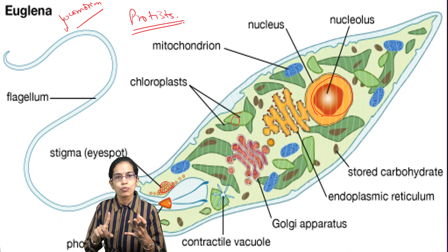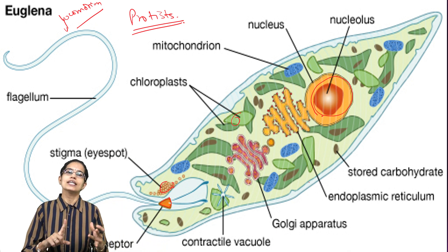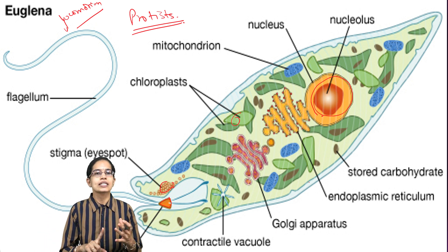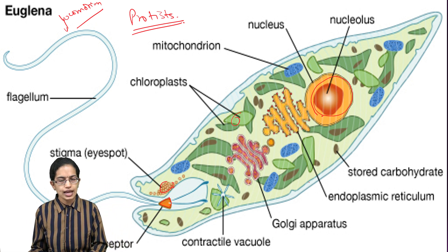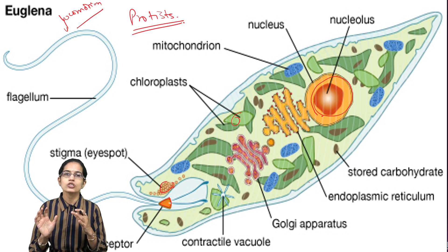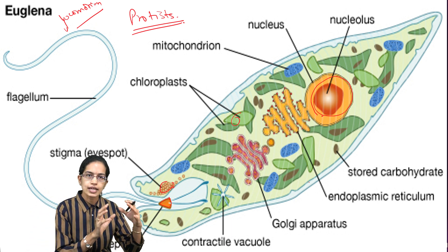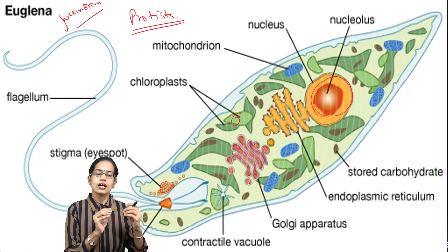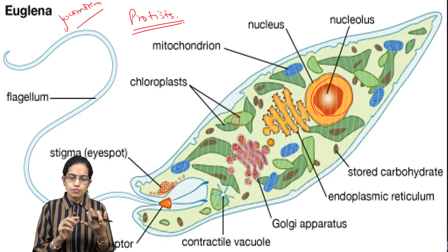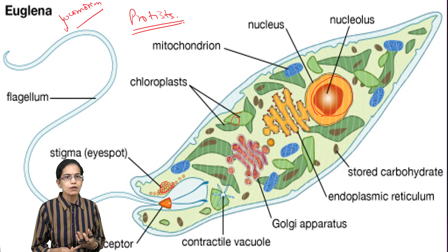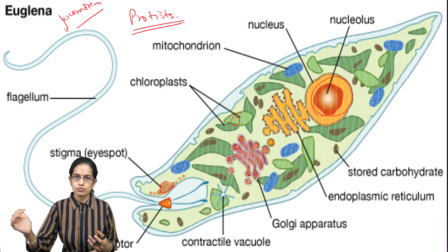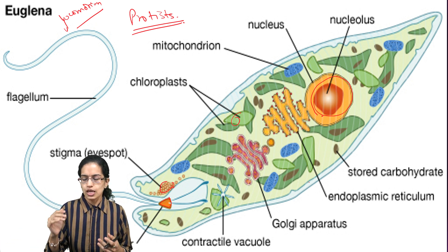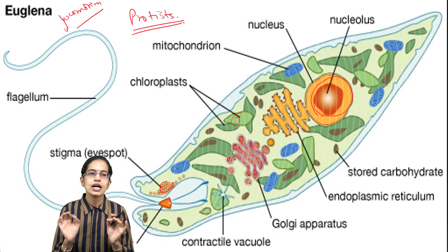Euglena is both autotrophic and heterotrophic — it can prepare its own food using light and chloroplasts, or it can intake smaller organisms. It also has a whip-like flagellum that helps in movement and locomotion, and euglena has vacuoles that are present.